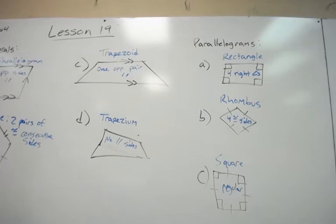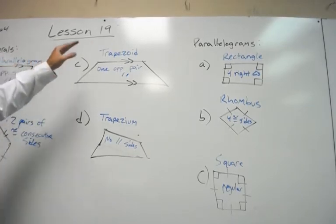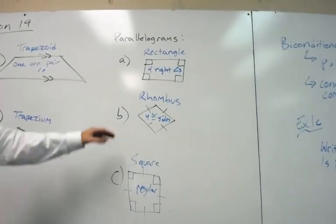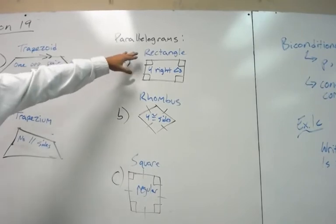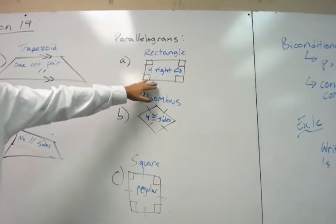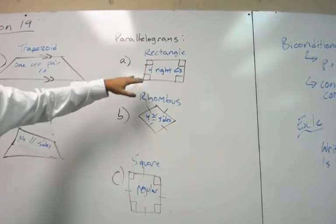But we do want to look at parallelograms a little more in detail, because there's three specific types of parallelograms. For parallelograms, you have a rectangle, and that has four right angles. It does not necessarily have congruent sides, but it does have four right angles.